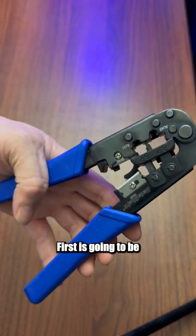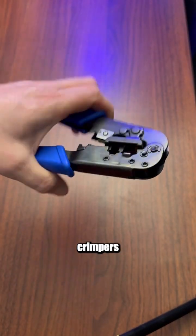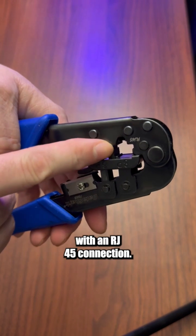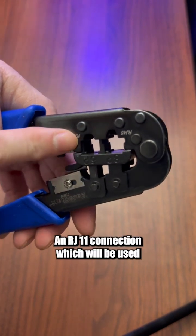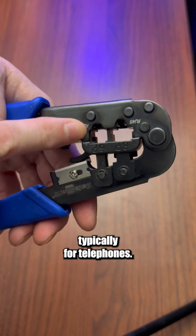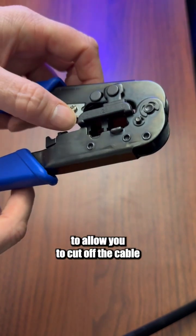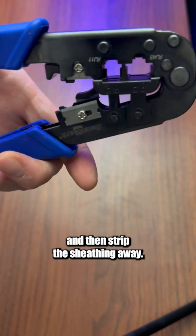We're going to need two pieces of equipment to help us succeed in this job. First is going to be our set of RJ45 crimpers. These will be equipped with an RJ45 connection. This is for data connections. An RJ11 connection, which will be used typically for telephones. Then you'll have your cutters here to allow you to cut off the cable and then strip the sheathing away.